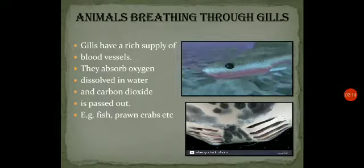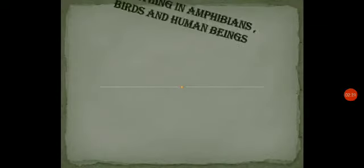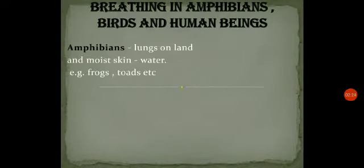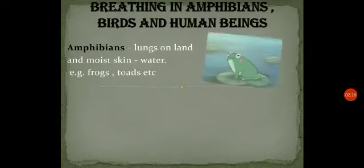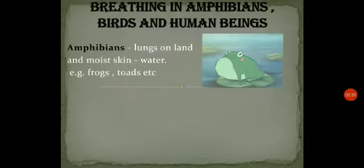Exchange of gases takes place through the gills. Next we will talk about amphibians. On land, they use lungs, and in water they use their moist skin — like in frogs and toads.